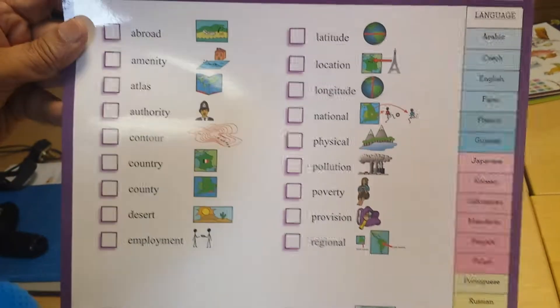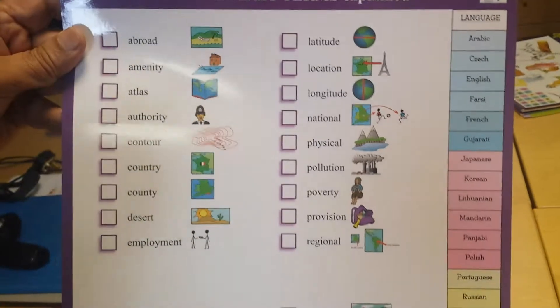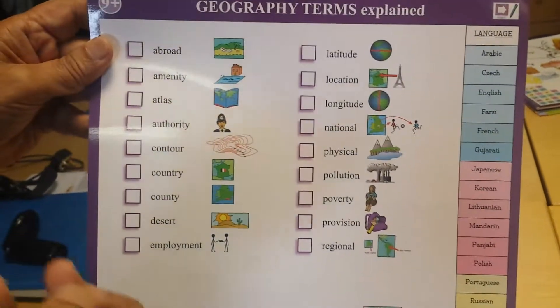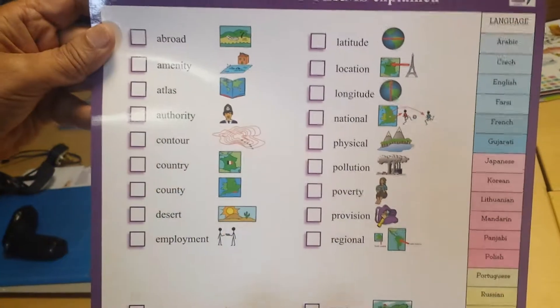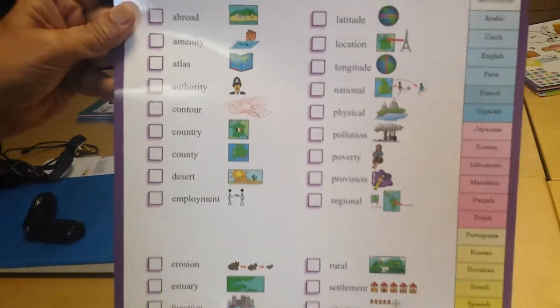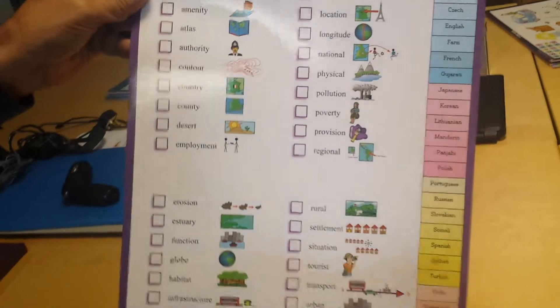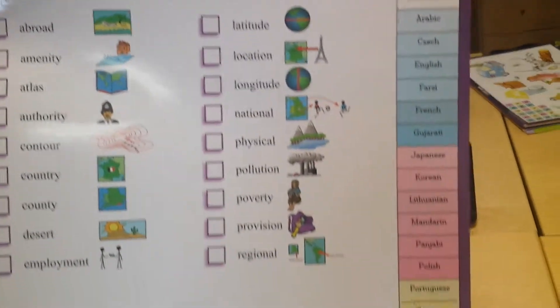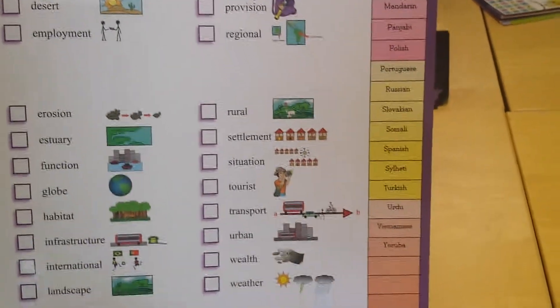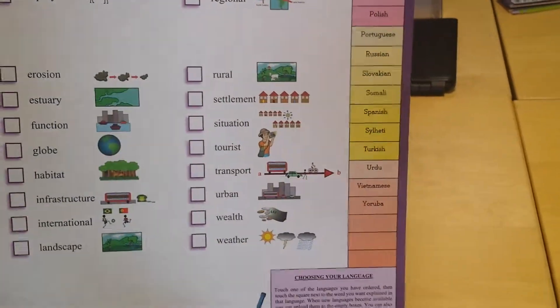You can see that the terms are not just defined but explained, and sometimes given examples. The pictures are also there to give a hint of what's going on, and you can listen to it all in Arabic, Czech, English, Farsi, French, and so on, right down to Yoruba even. Thank you.